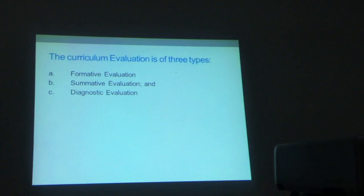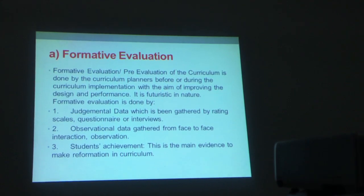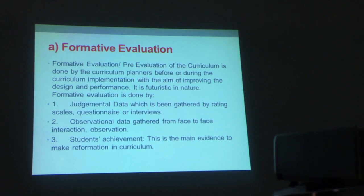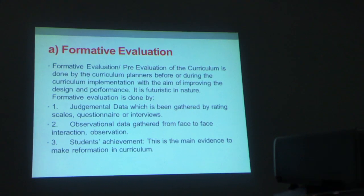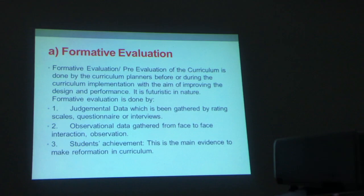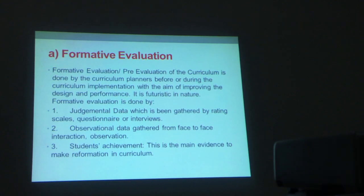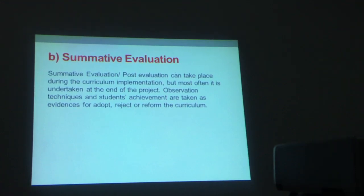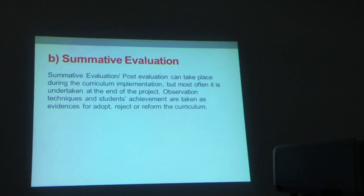Curriculum evaluation is of three types: formative, summative, and diagnostic. Formative evaluation is the pre-evaluation of the curriculum in which planners do it before or during curriculum implementation with the aim of improving the design and performance. It is futuristic in nature and uses judgmental data gathered by rating scales, questionnaires, or interviews; or observational data gathered from face-to-face interaction and observations; or students' achievement as the main evidence for reformation. Summative evaluation is also called post evaluation, which takes place during curriculum implementation but most often is undertaken at the end of the project. Observation techniques and students' achievement are taken as evidence for adopting, rejecting, or reforming the curriculum.